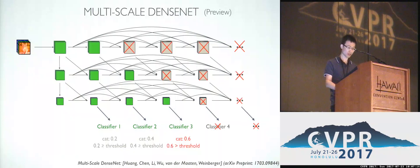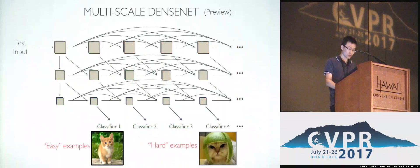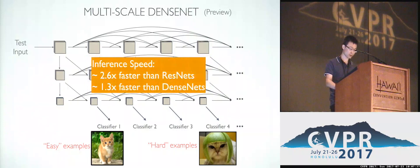For the rest of features and the rest of classifiers, we can skip the computation. During inference, we can exit easier images from earlier classifiers and only use expensive classifiers to evaluate hard examples. This gives us 2.6 times faster inference than ResNet and about 1.3 times faster than DenseNet.